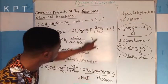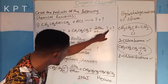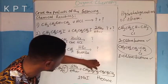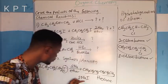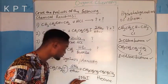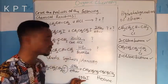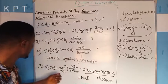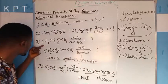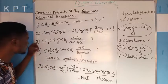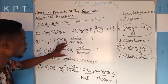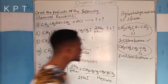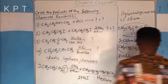So the first answer blank stands for hexane, and the second answer blank stands for two molecules of sodium iodide. Very quickly, what about the third one? Like I said, the third one is nothing but Clemmensen reduction reaction.